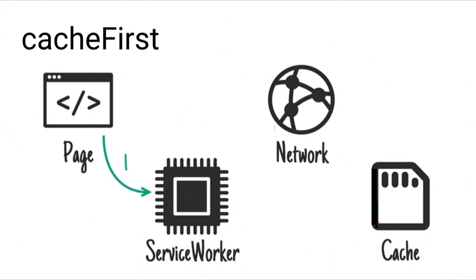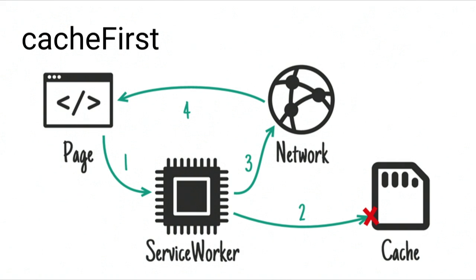Cache-first is sort of the opposite of network-first. This will go to the cache, and only if that fails will it try the network. If the network succeeds, it will update the cache. But because it's always going to the cache first, once it has succeeded once and put something into the cache, it will always use that old version — it will always be stale after that first time.